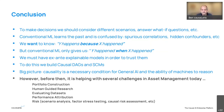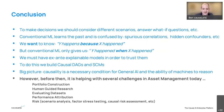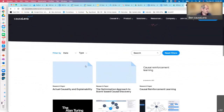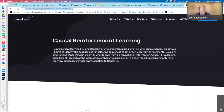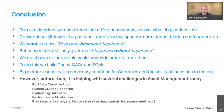On causal reinforcement learning: the short answer is yes, traditional reinforcement learning looks for associations. The causal approach instead looks for true causal drivers and factors. A paper on causal reinforcement learning will be shared in the chat for further reading.